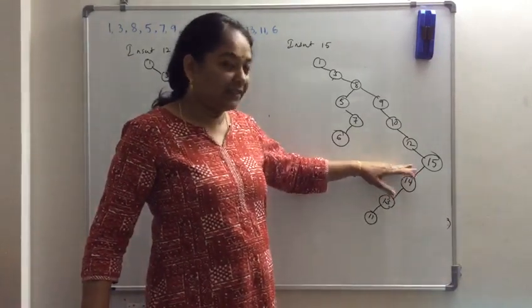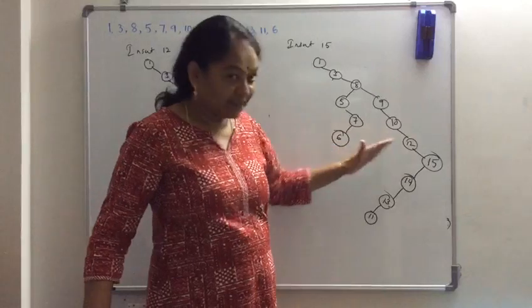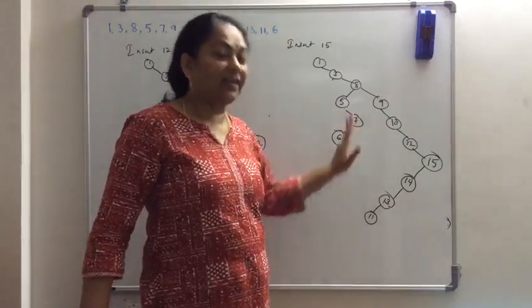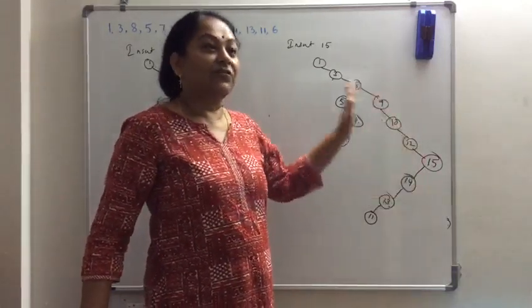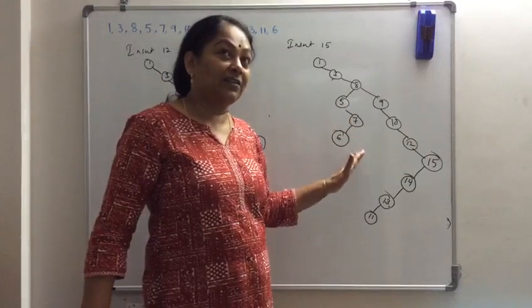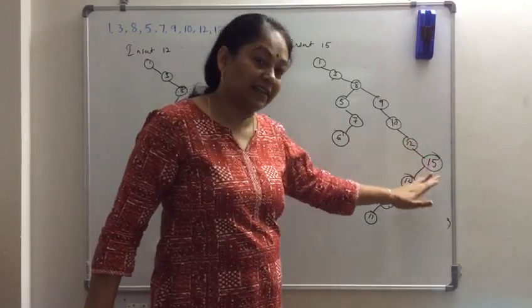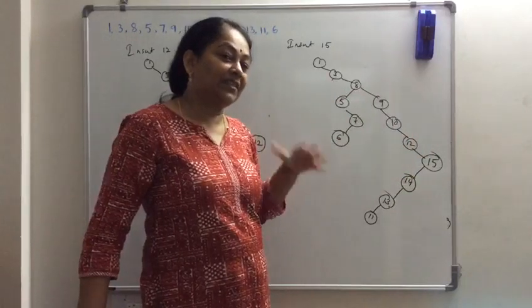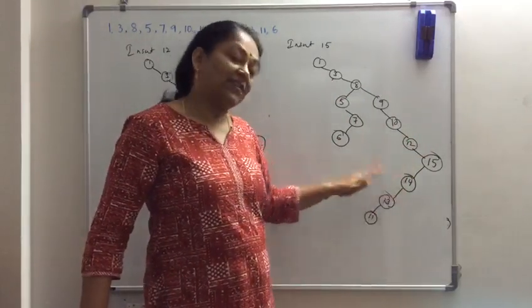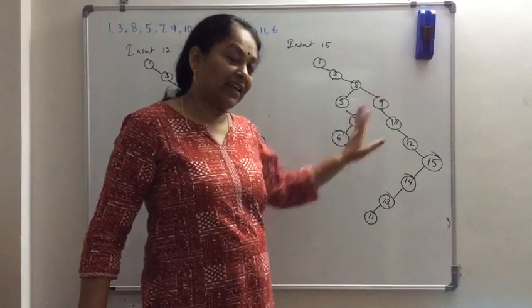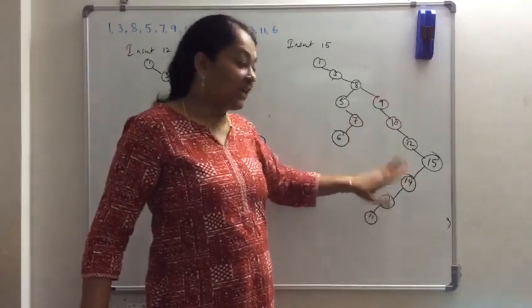If the node to be deleted has the left child and there is no right child, if there is no left child and there is a right child. And also the second case is if it has both the left child as well as the right child. So that we have to consider.